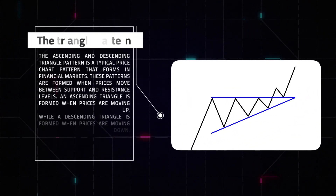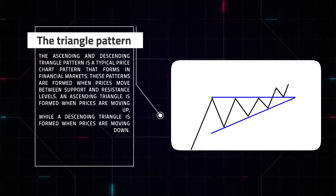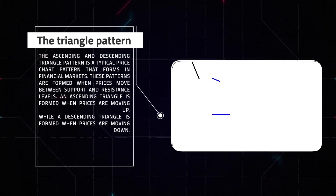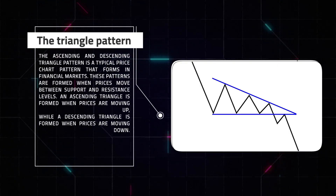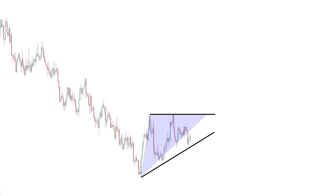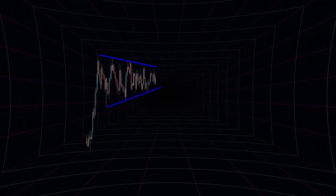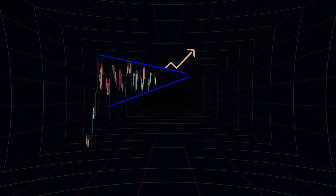The ascending and descending triangle pattern is a typical price chart pattern that forms in financial markets. These patterns are formed when prices move between support and resistance levels. An ascending triangle is formed when prices are moving up, while a descending triangle is formed when prices are moving down. In an ascending triangle, the closing price is moving up but the opening price is moving down, forming the triangle.